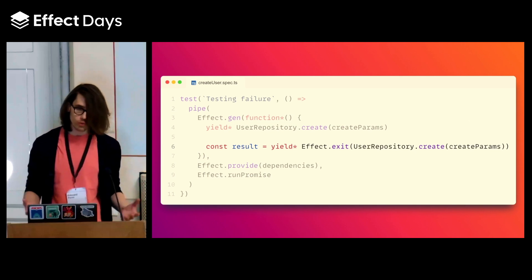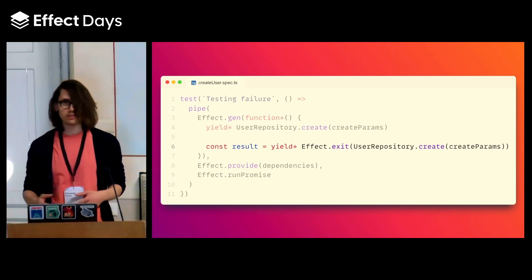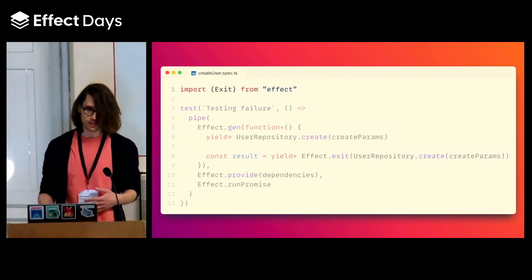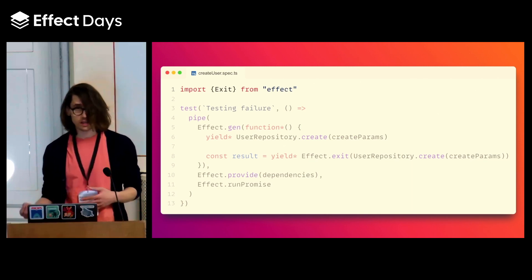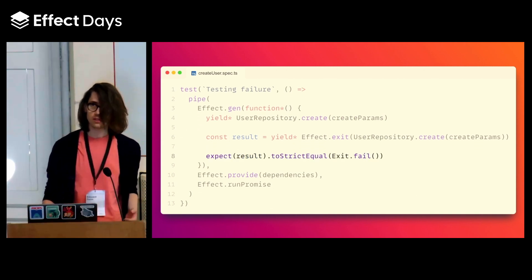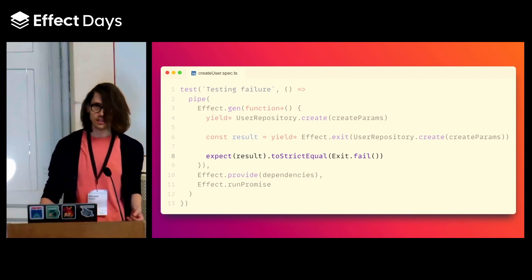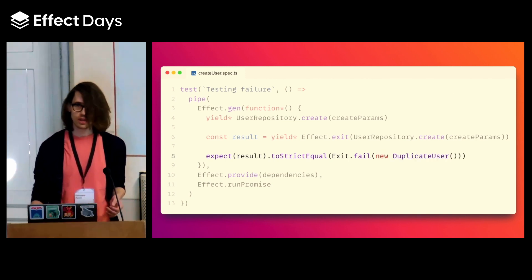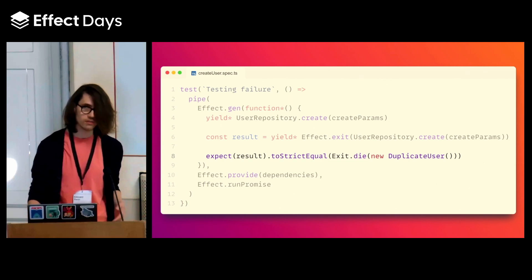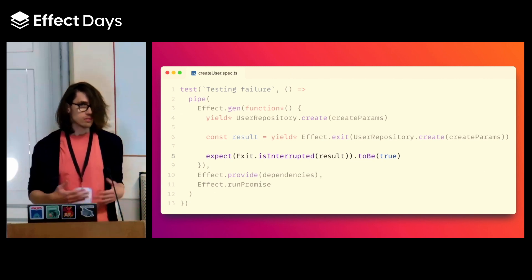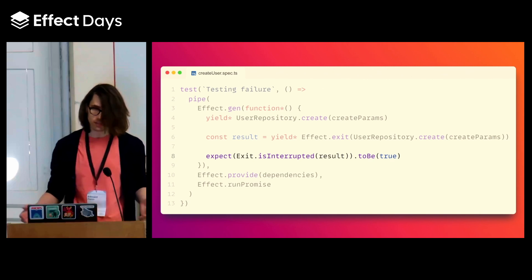With effect.exit, our effect will now always succeed, even if it failed, even if it died, whatever happened. So the test won't crash anymore, and it will always succeed with an exit data type that contains the status of the effect and the data it completed with. Meaning, we can take the result of that second call and assert on its exit status. Here, we expect the effect to have completed as a failure, and more specifically, a failure containing a duplicate user error. If instead we want to test that the effect died, there is exited.die. If you want to test that it was interrupted, there is exited.interrupted. And there's more — basically, if you want to assert on the exit status of an effect, exited is what you need.